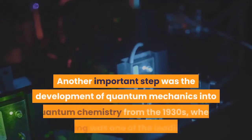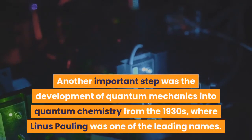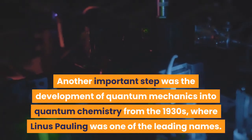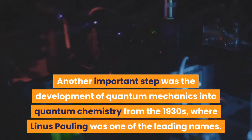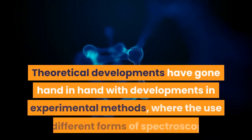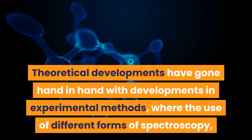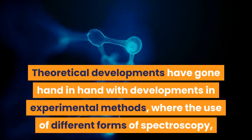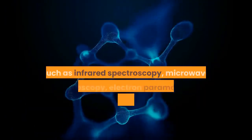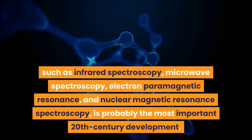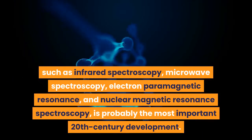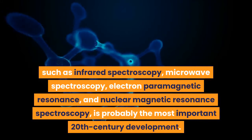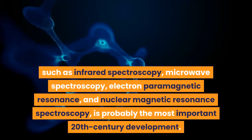Another important step was the development of quantum mechanics into quantum chemistry from the 1930s, where Linus Pauling was one of the leading names. Theoretical developments have gone hand-in-hand with developments in experimental methods, where the use of different forms of spectroscopy, such as infrared spectroscopy, microwave spectroscopy, electron paramagnetic resonance, and nuclear magnetic resonance spectroscopy, is probably the most important 20th century development.